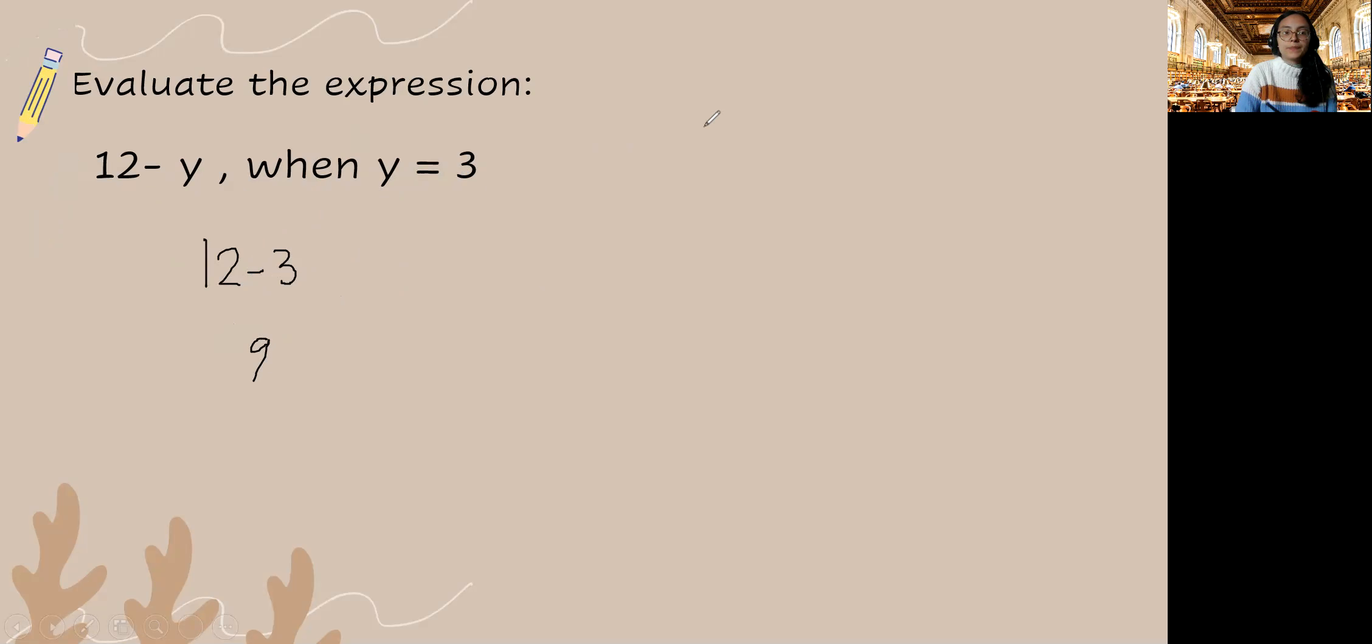Hopefully you're getting some practice out of this. This is fairly simple and straightforward. For this expression we have 3 minus h when h is equal to 1. So again we're going to substitute 1 for h. Carry out our operation which is subtraction, 3 minus 1 is 2.